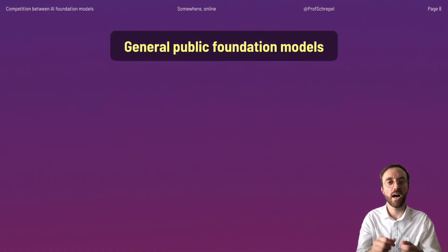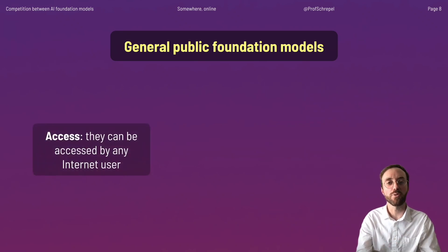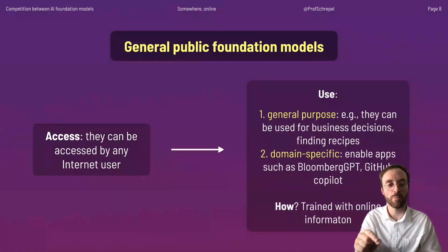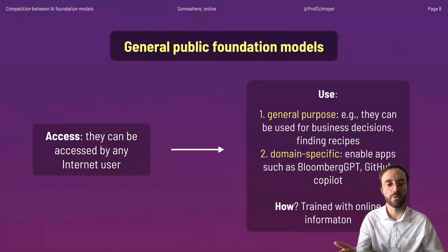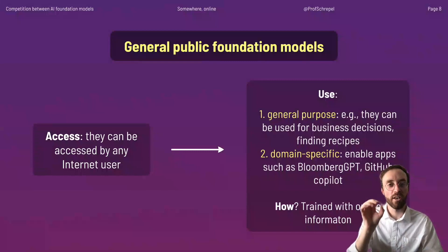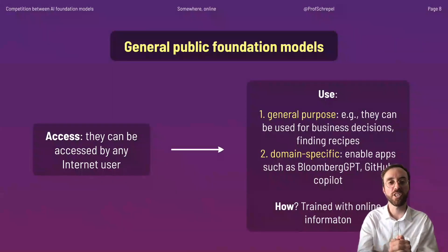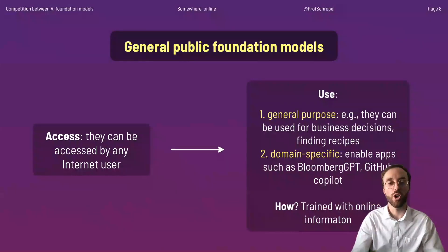The first type is what we call general public foundation models. They can be used by any internet user. A distinction has to be made between general purpose and domain-specific foundation models. General purpose models can be used for anything — business decisions, finding recipes, and so on. Domain-specific models are tailored to something very specific, such as Bloomberg GPT or GitHub Copilot. All of those are trained with online information.